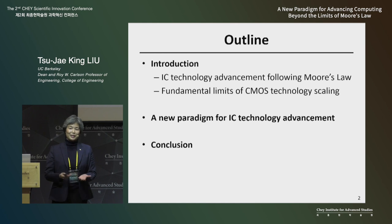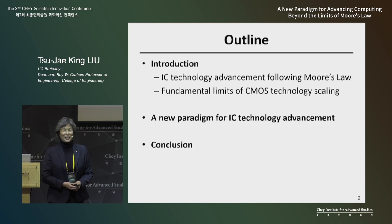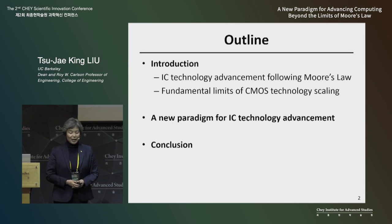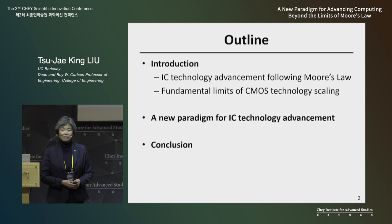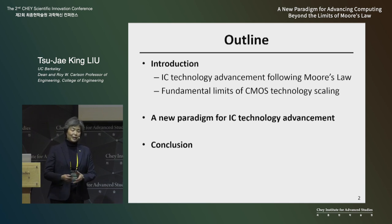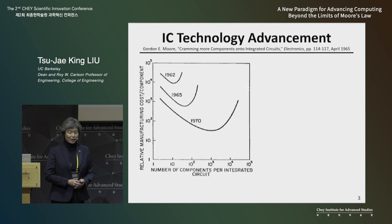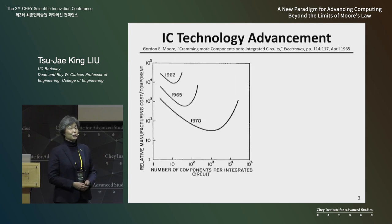I realized not everybody here has earned a PhD in electrical engineering, so I thought I should provide some fundamental background information on integrated circuit microchip technology advancement following Moore's Law, and explain why there are some fundamental limits to Moore's Law. Then we can talk about a new paradigm for continuing to advance integrated circuit technology to meet the promise of digital transformation for the benefit of society.